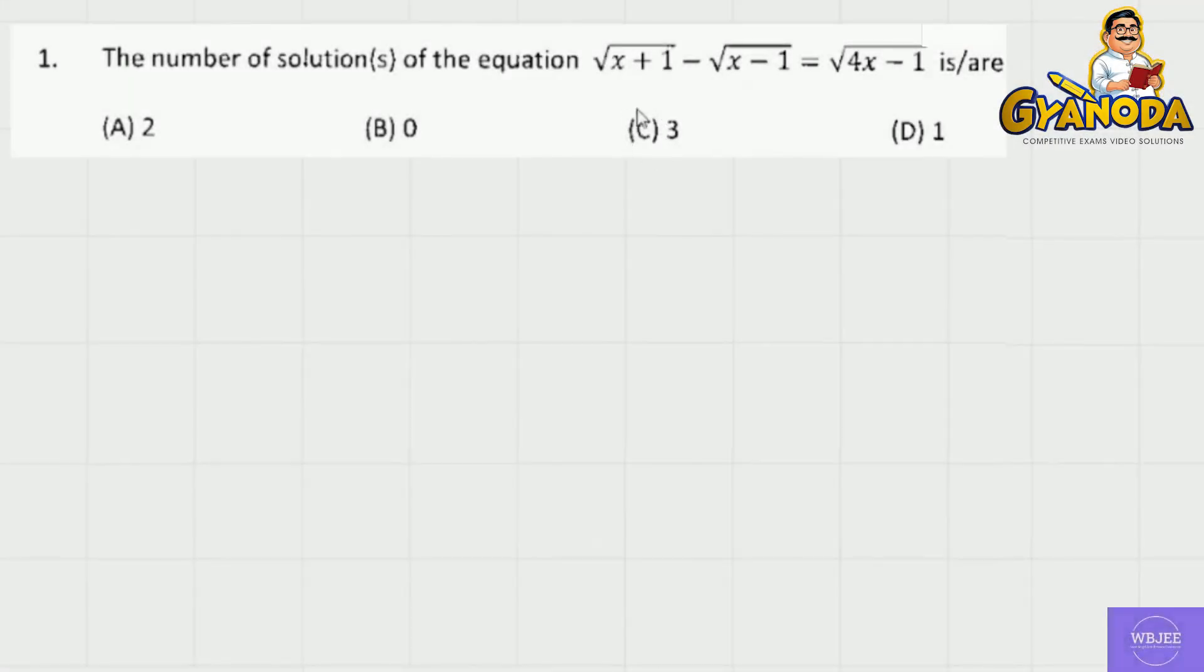The problem is that root x plus 1 minus root x minus 1 equals root 4x minus 1. We need to find the number of solutions to this equation.